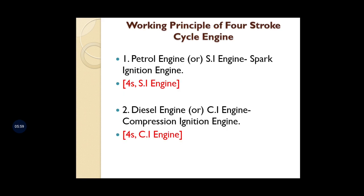In our syllabus we have two four-stroke cycle engines: the petrol engine, also called a spark ignition engine (4S SI engine), and the diesel engine, also called a compression ignition engine (4S CI engine). In this lecture I am going to discuss the four-stroke spark ignition (petrol) engine only; the four-stroke diesel engine will be covered in the next lecture.